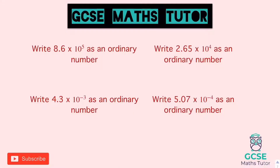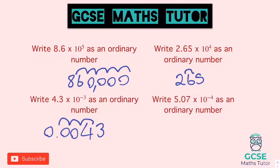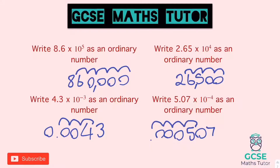Here are some more to try — pause and have a go at these four. The answers: 8.6 times 10 to the 5 gives 860,000. 4.3 times 10 to the minus 3 gives 0.0043. 2.65 times 10 to the minus 4 — wait, that's actually 0.000265. And 5.07 times 10 to the minus 4 gives 0.000507.